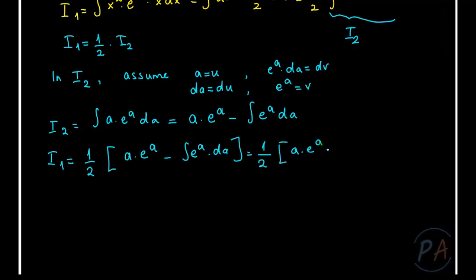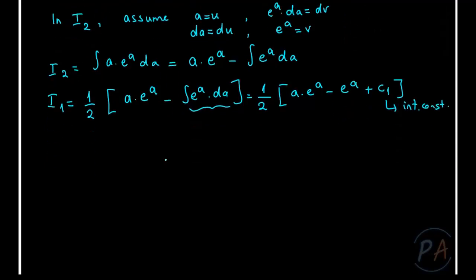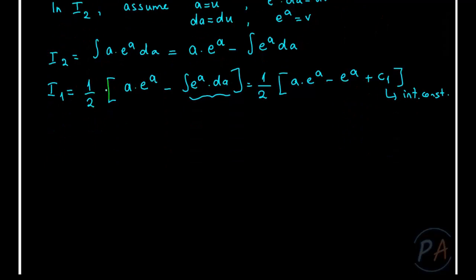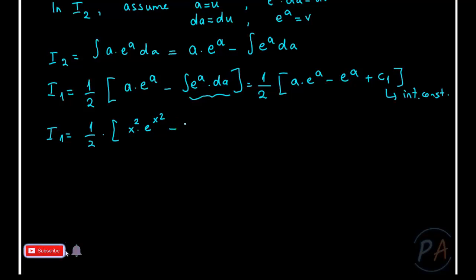This gives I2 equals a times exponential a minus exponential a plus C1, where C1 is the constant of integration. Returning to the original variables, since a equals x squared, I1 equals one-half times x squared times exponential x squared minus exponential x squared plus C1.